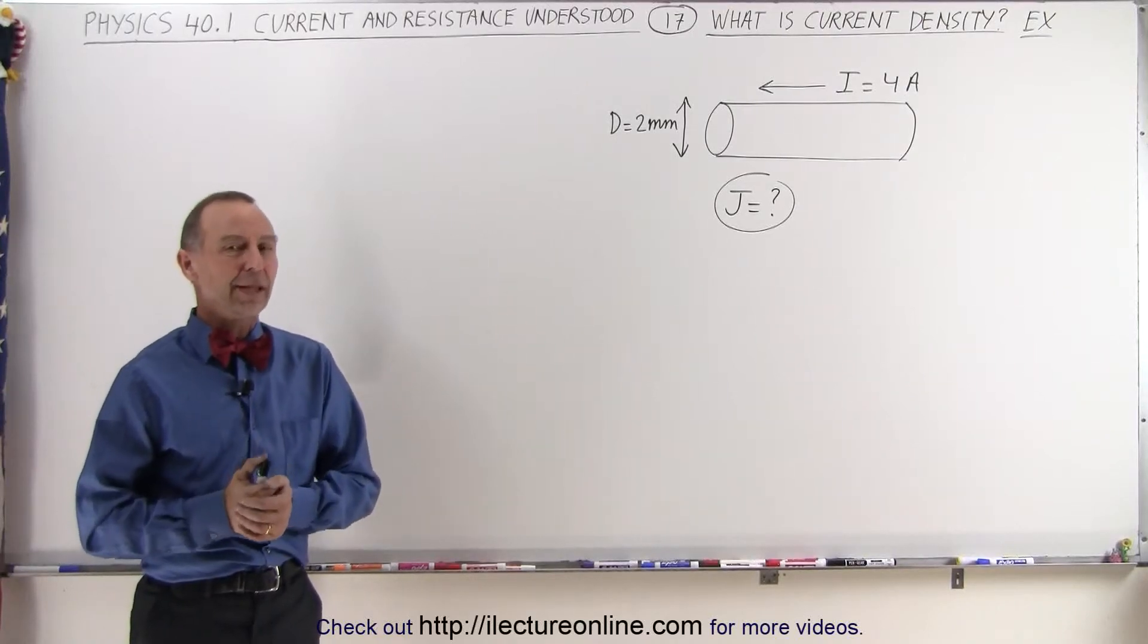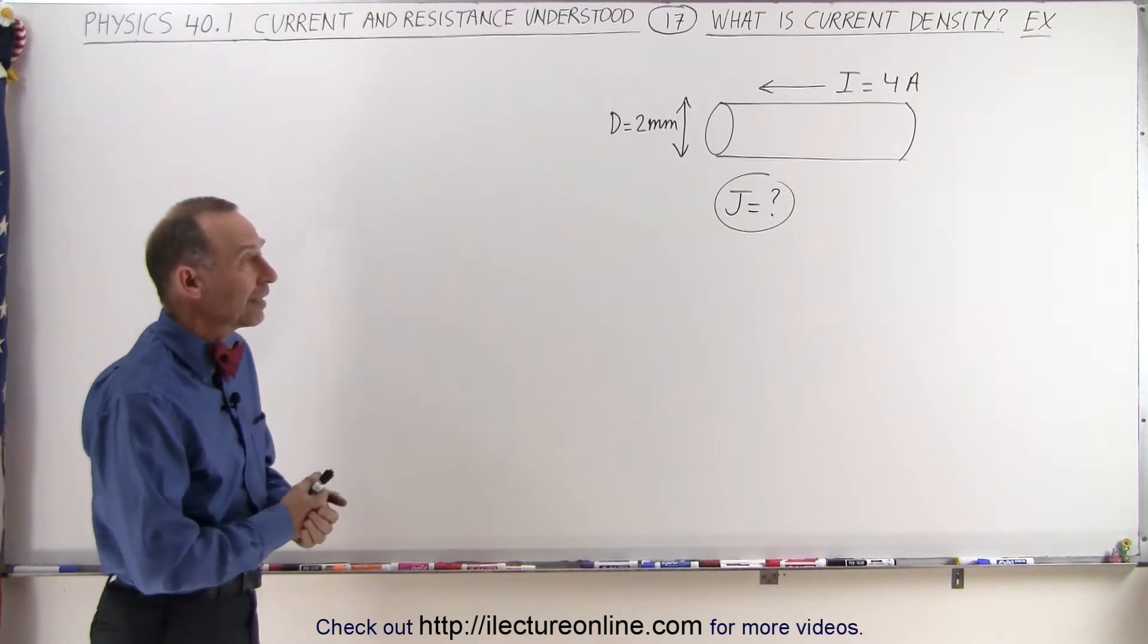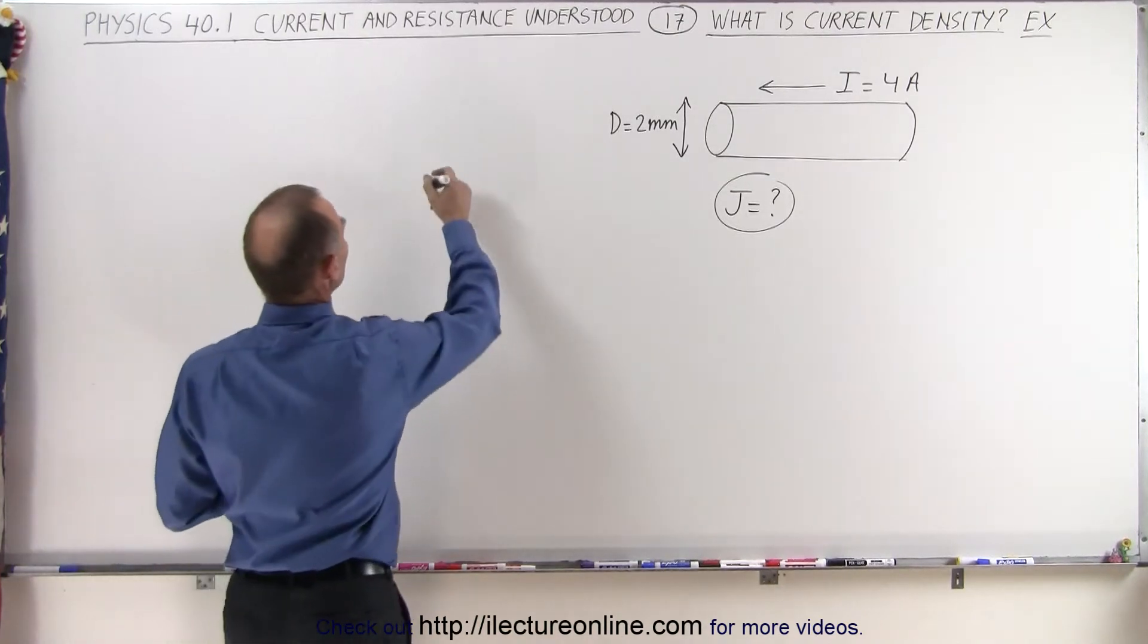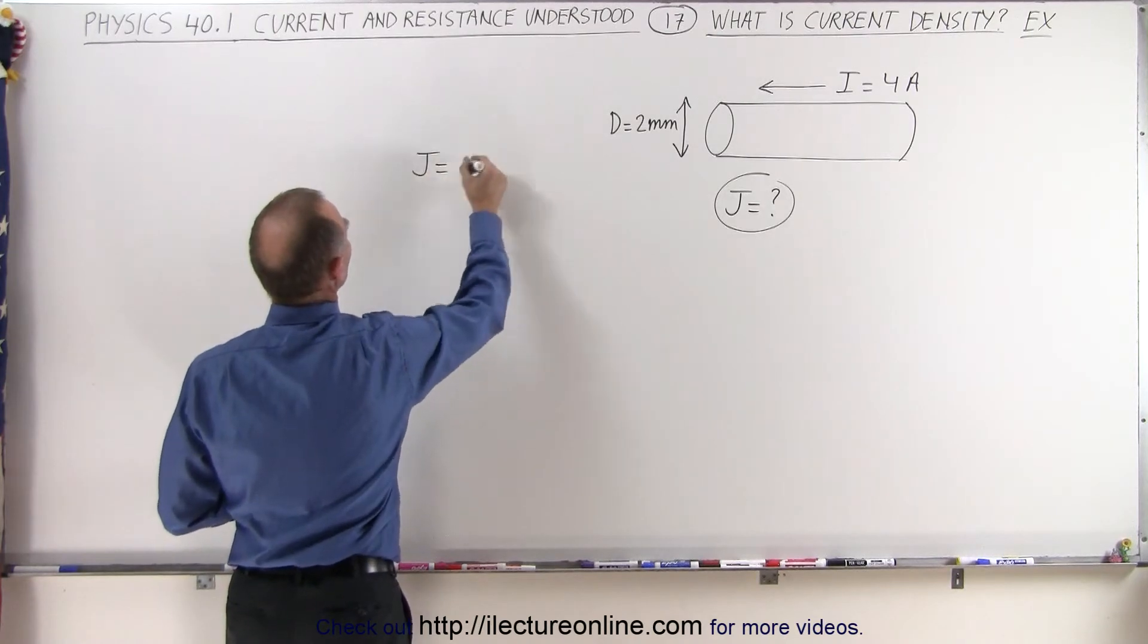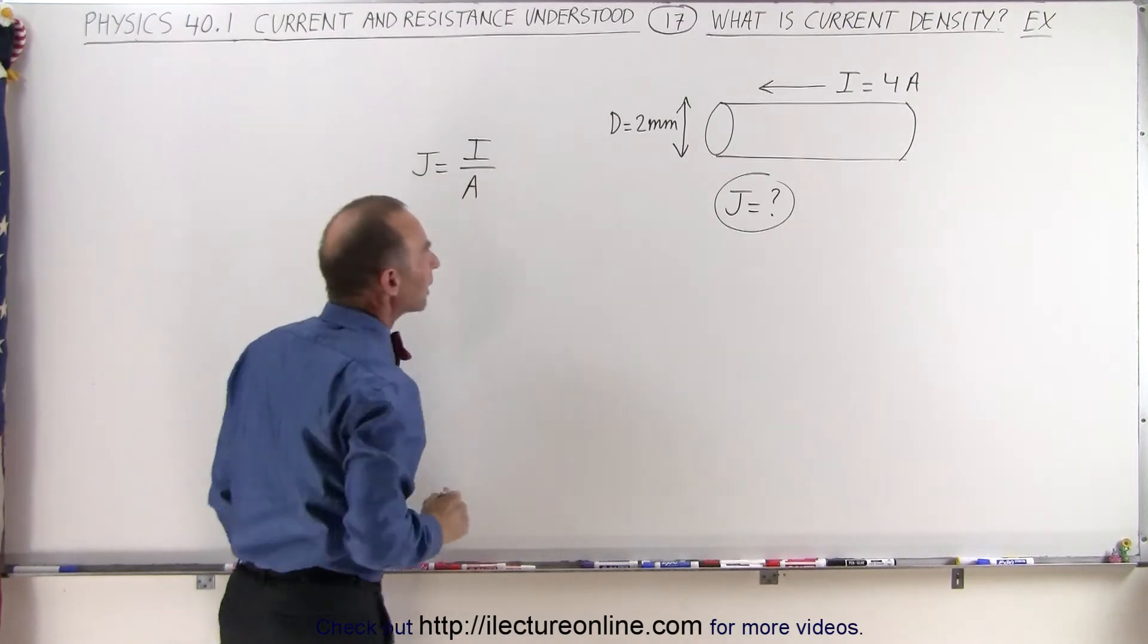Welcome to our lecture online. Nothing like a good example to show you what something means. Here we're trying to find out the meaning of current density, and we already saw in the previous video that the current density is equal to the current divided by the cross-sectional area of the conductor.